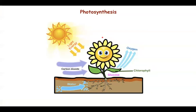Photosynthesis is basically a process carried out in the presence of sunlight. All green parts having chlorophyll use carbon dioxide of the atmosphere. The water is absorbed by the roots, and they produce food in the form of glucose. Oxygen is released as a by-product.